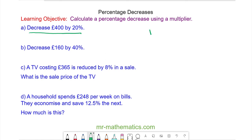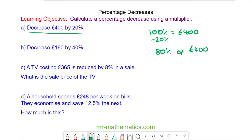To do this we need to understand that 100 percent is the original value of 400 pounds, and we're going to take away the 20 percent which is the decrease, so we're left with 80 percent of 400 pounds. To use a multiplier we need to write this 80 percent as a decimal, which is 80 divided by 100.